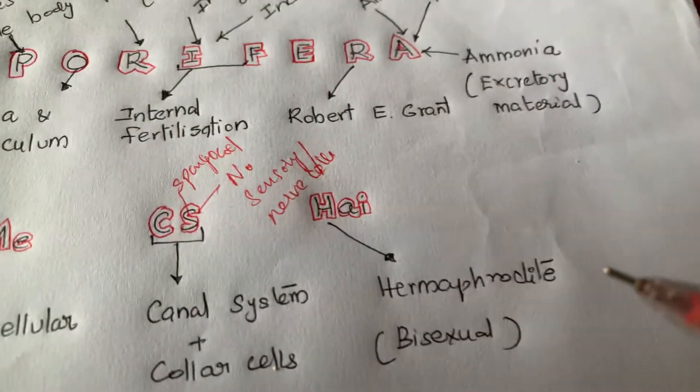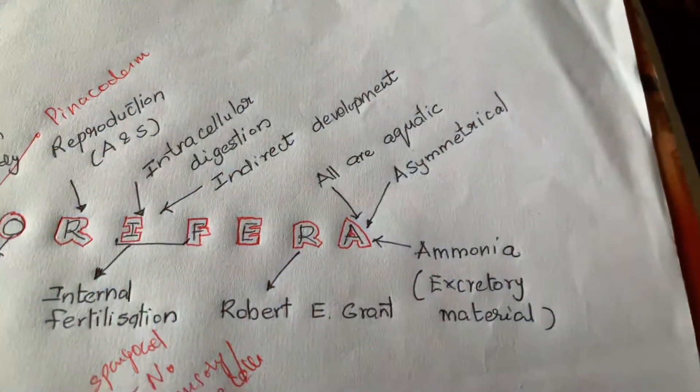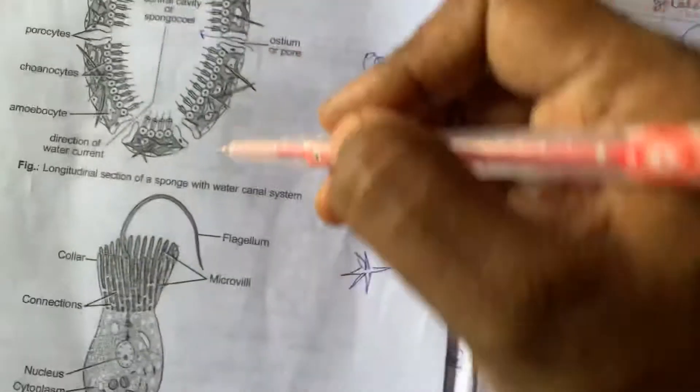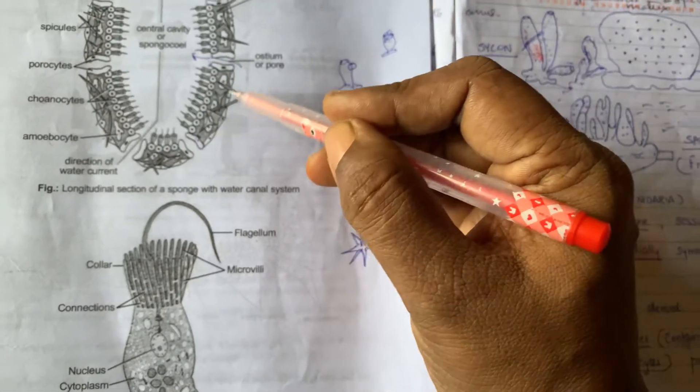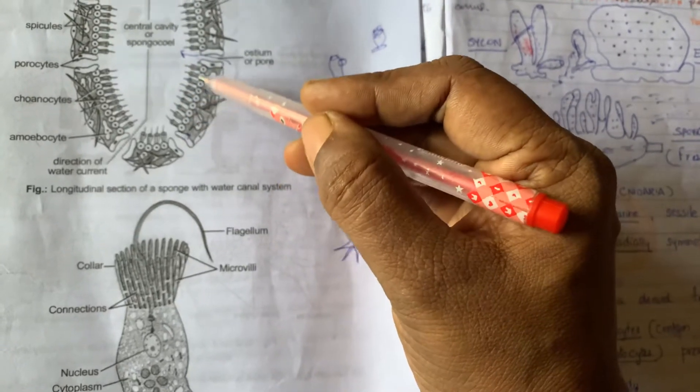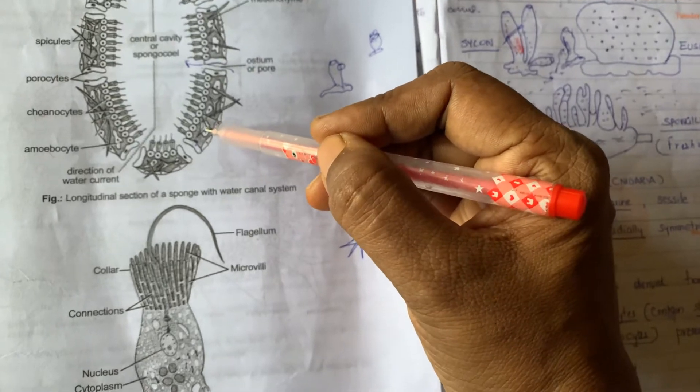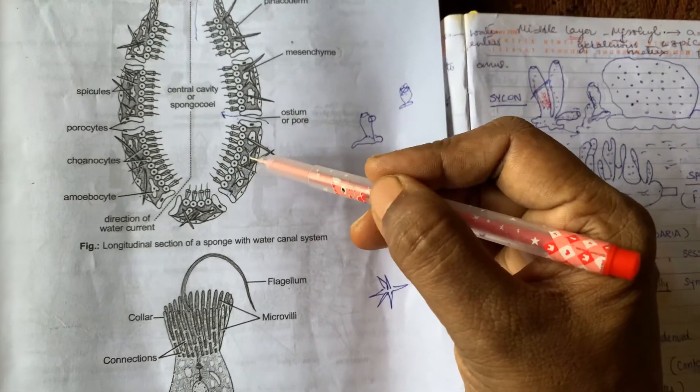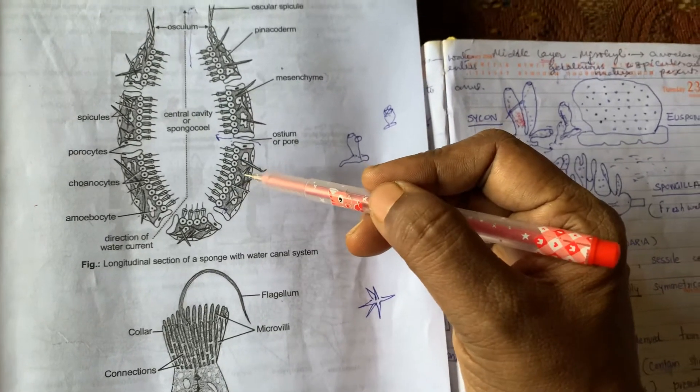And here, in between the pinacocytes and choanocytes - here collar cells I told you - pinacocytes also will be present outside protecting the sponge. Outside layer is pinacoderm consisting of pinacocytes. And the pinacocytes near the pores are called porocytes. So between the pinacoderm, which is the outer layer protecting the entire sponge, and spongocoel is lined by choanocytes or collar cells or flagellated cells. In between them, mesenchyme or mesohyl is present where you see amoebocytes, archaeocytes, etc. And here, the supporting structures called spicules are present which are made up of either calcium carbonate or silica or fine sponge fibers are also present which gives support to the body.